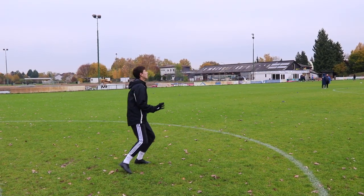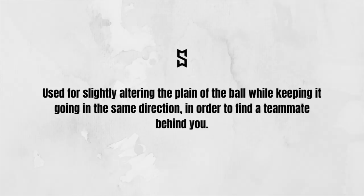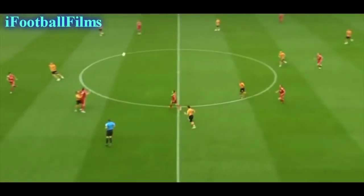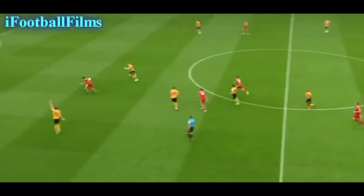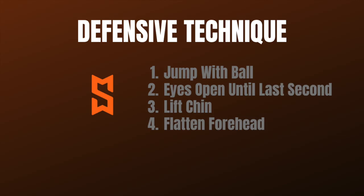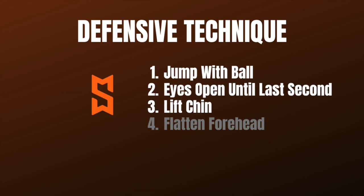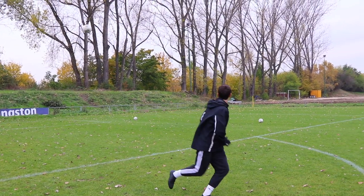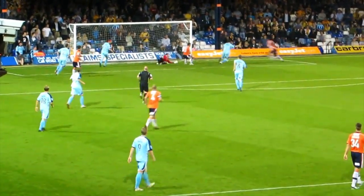Now we have the flick-on. The flick-on is used for altering the path of the ball while keeping it going in the same direction in order to find a teammate behind you. It's often used by an attacker at the near post to flick the ball to someone in the middle of the box, or off a goal kick to put a teammate in behind the defense. You'll be jumping with the ball, keeping your eyes open until the last possible second before lifting your chin and flattening out your forehead. This header doesn't require power — the idea is to use the speed of the ball to your advantage.